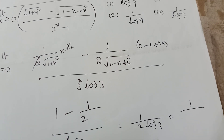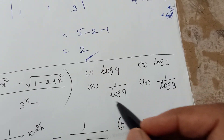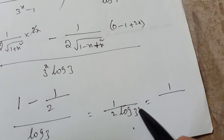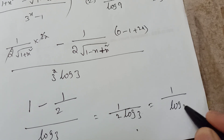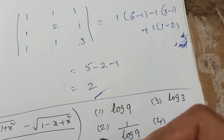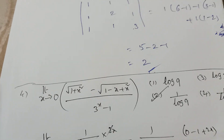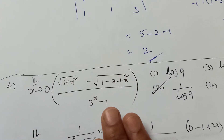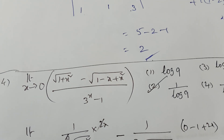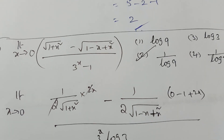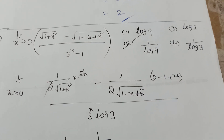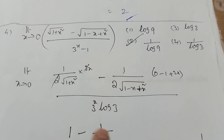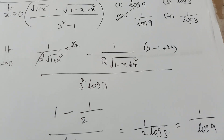Now using the log power rule: 1/(2log3) = 1/log(3²) = 1/log9. Check the options — the answer is 1/log9, which is the second option. Whenever numerator and denominator are in p/q form with roots or exponentials, apply the derivative method and you will complete it in about one minute. Thank you for watching.